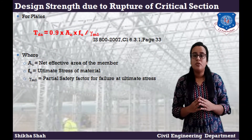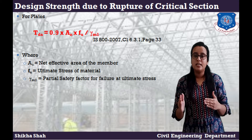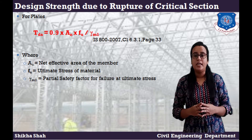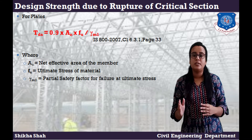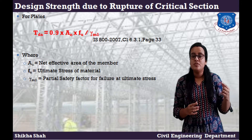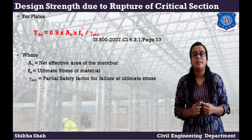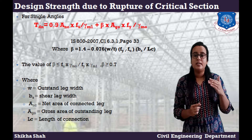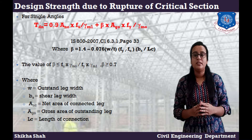Design strength due to rupture of critical section — there are two equations, for plates and for single angles. For plates, the equation is: Tdn = 0.9 × An × Fu / γm1, given in Clause 6.3.1, page 33 of IS 800. Where An is the net effective area of the member, Fu is the ultimate stress of the material, and γm1 is the partial safety factor for failure at ultimate stress. For single angles, the equation is: 0.9 × Anc × Fu / γm1, plus β × Ago × Fy / γm0.